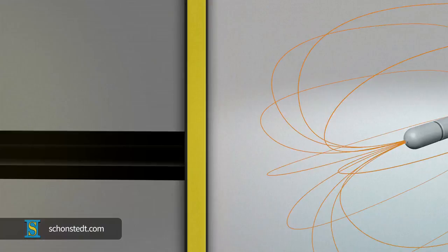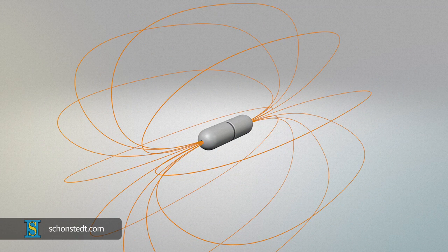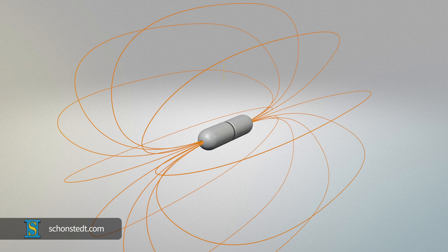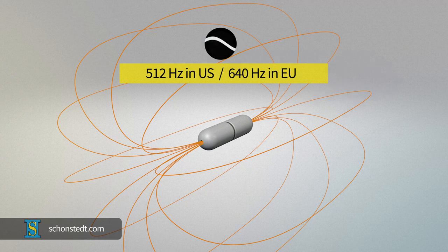Although sondes may come in various frequencies, there are two fairly standard operating frequencies that are commonly used and work for most applications. Those frequencies are 512 Hz in the U.S. and 640 Hz in the EU.